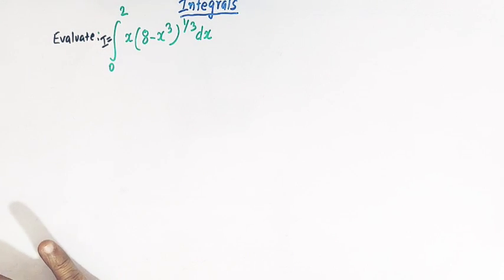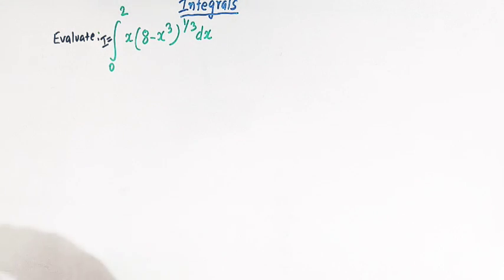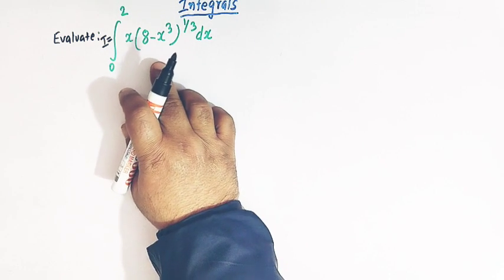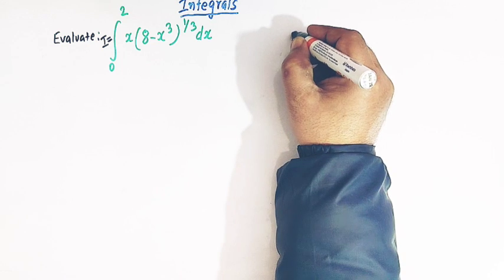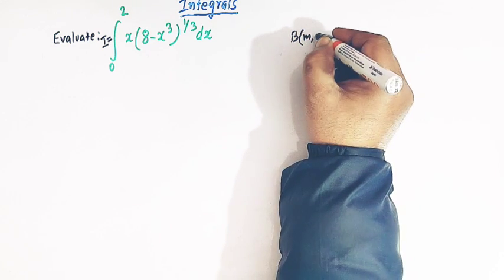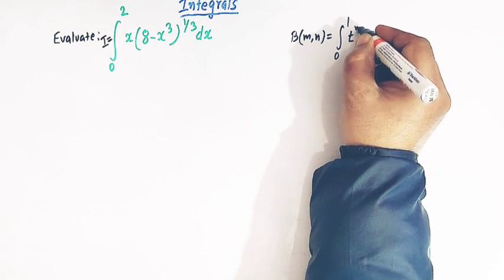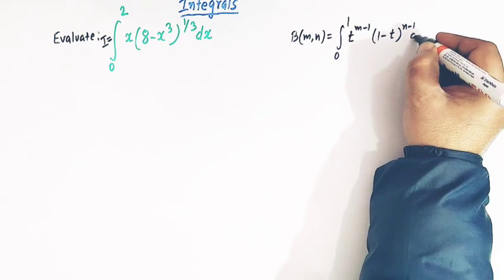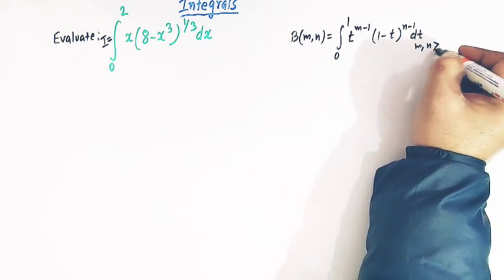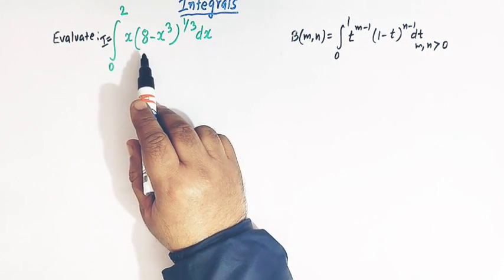We have already solved a lot of problems related to beta and gamma functions in our channel. Let us quickly see the results which are going to be used to solve this integral. The first result is the definition of the beta function: beta(m, n) is given by the integral from 0 to 1 of t raised to m minus 1 times (1 minus t) raised to n minus 1, where m and n are greater than 0.